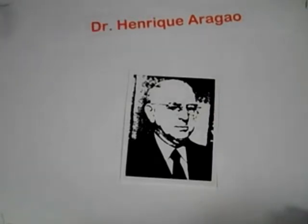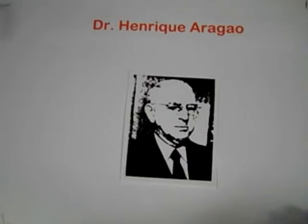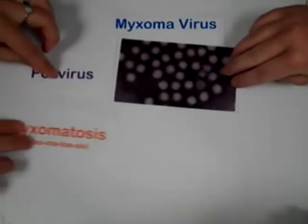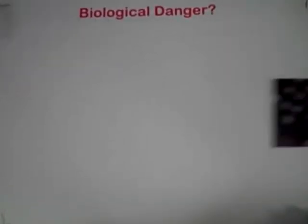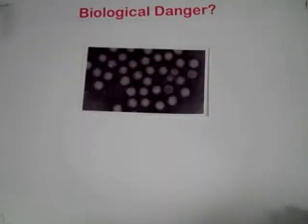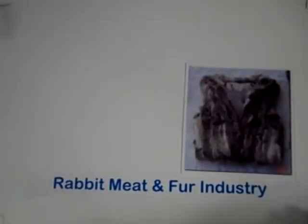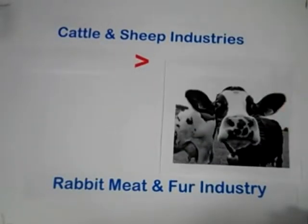A South American researcher, Dr. Arago, had been researching the effects of a virus that he felt could help control the rabbit population in Australia. He was specifically studying the myxoma virus, a pox virus that caused myxomatosis and kept South American rabbit populations under control. However, when he proposed this idea to Australian officials, they were skeptical and worried that the virus would pose as a biological danger to the environment. The Australian government was also wary of introducing the virus because the rabbit, meat, and fur industries were thriving. However, the cattle and sheep industries were more important to the economy and the local food source.